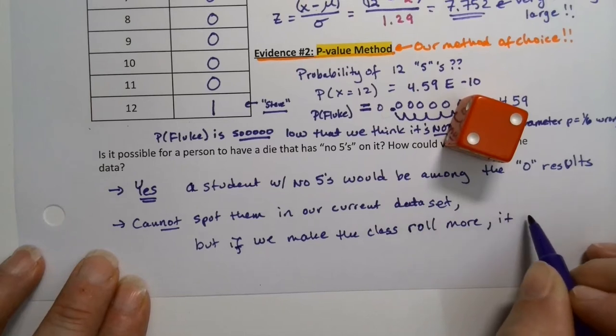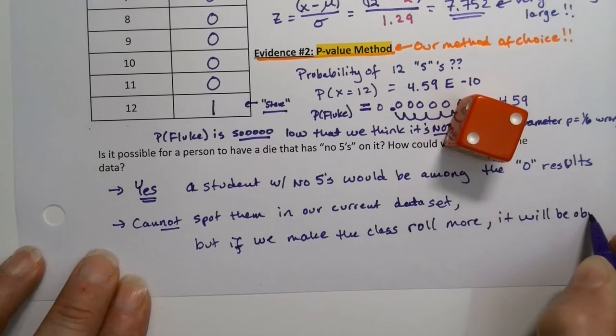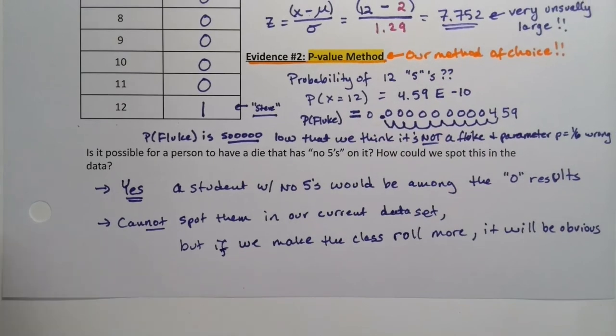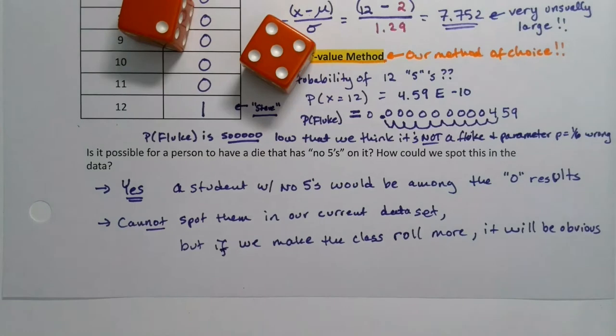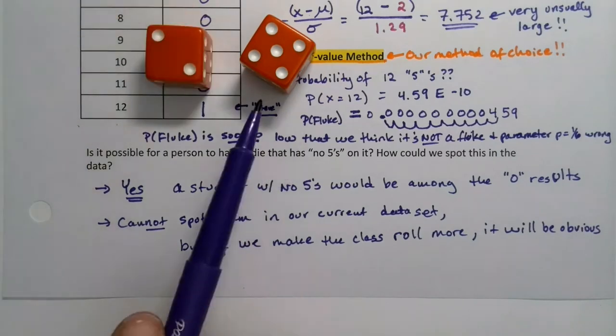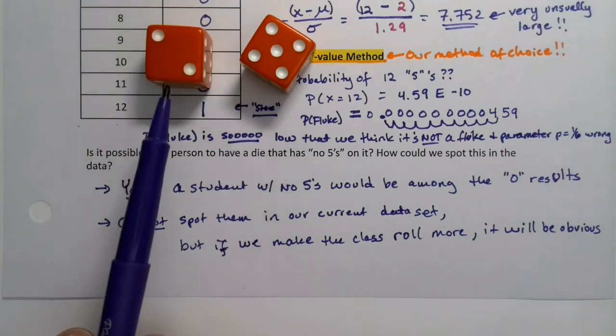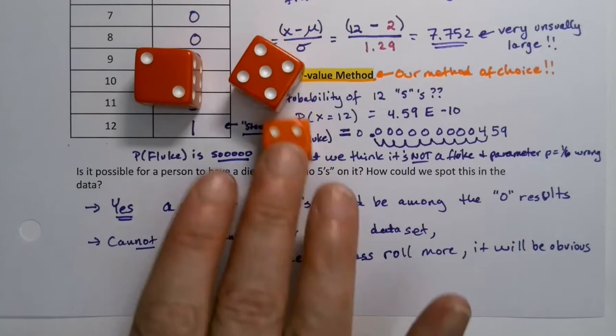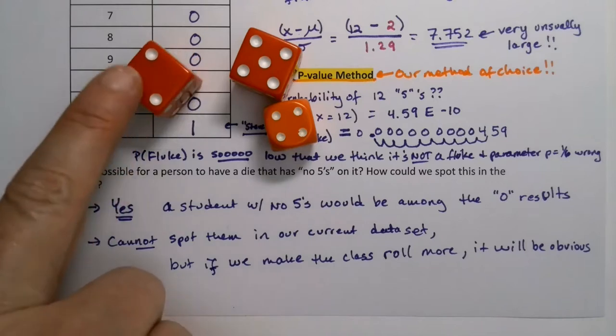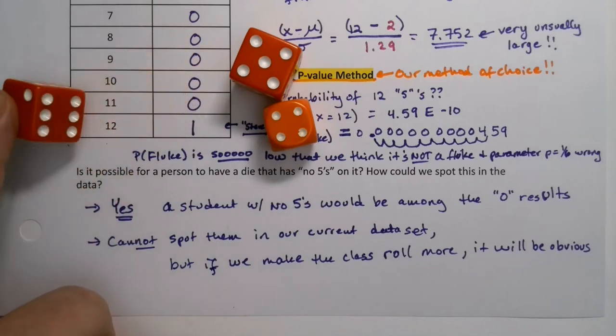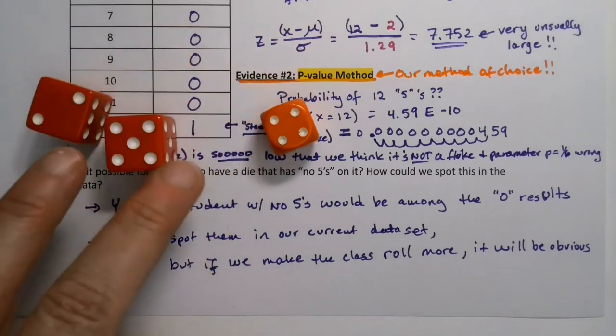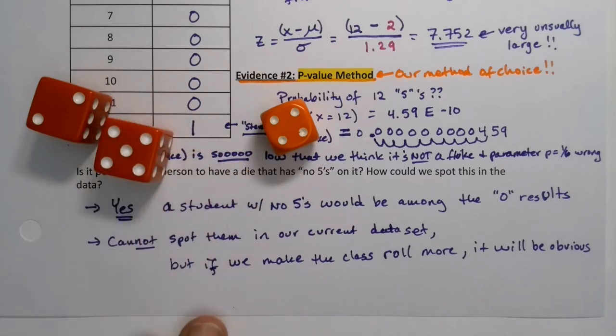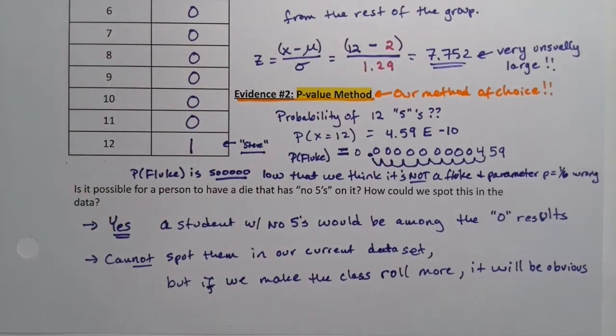If I made the class roll a hundred times both the zero and the hundred dice would become very obvious. This one would be a hundred, this one would be zero, but no other student with a normal die would be either of those things. The student with no fives will stay at zero no matter what and the student with 12 fives will turn into a student with 100 fives because all they're going to get is fives.